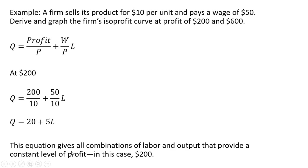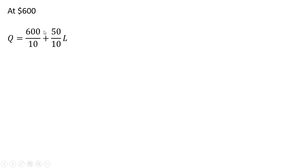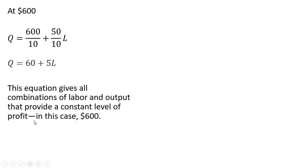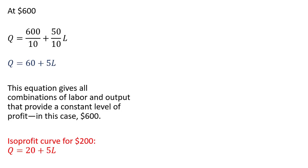This equation gives all combinations of labor and output that provide a constant level of profit — in this case, $200. So if L equals 1, Q would be 25; that's one combination of labor and output that provides $200 of profit. At $600, plugging in $600 for profit with the same price of $10 and wage of $50, this is what our isoprofit curve looks like for $600. Give me any value of L and I'll get the corresponding value of Q, and that combination will give us $600 of profit.